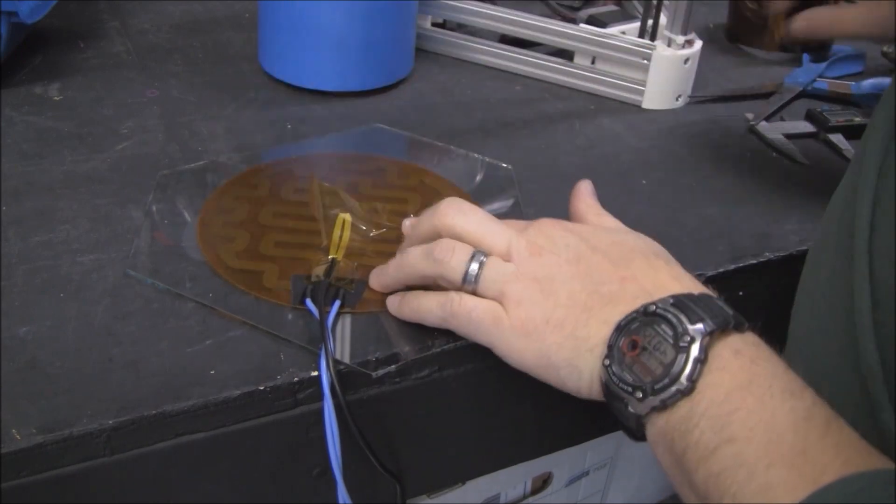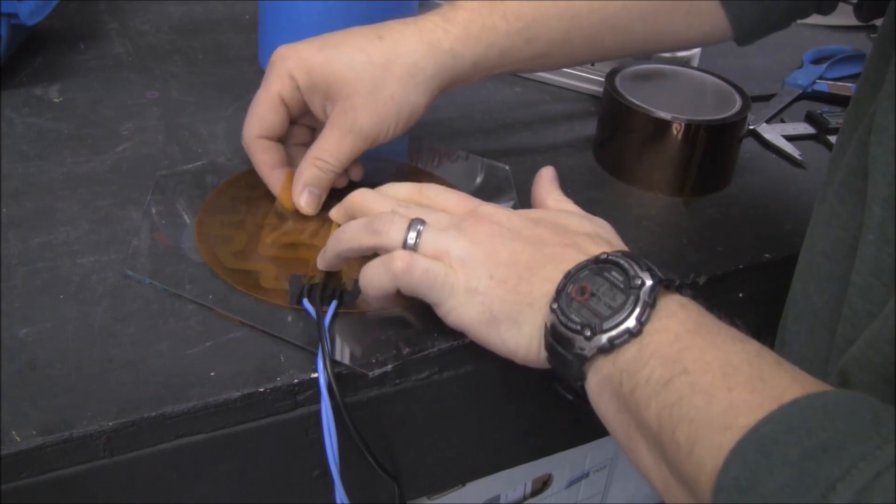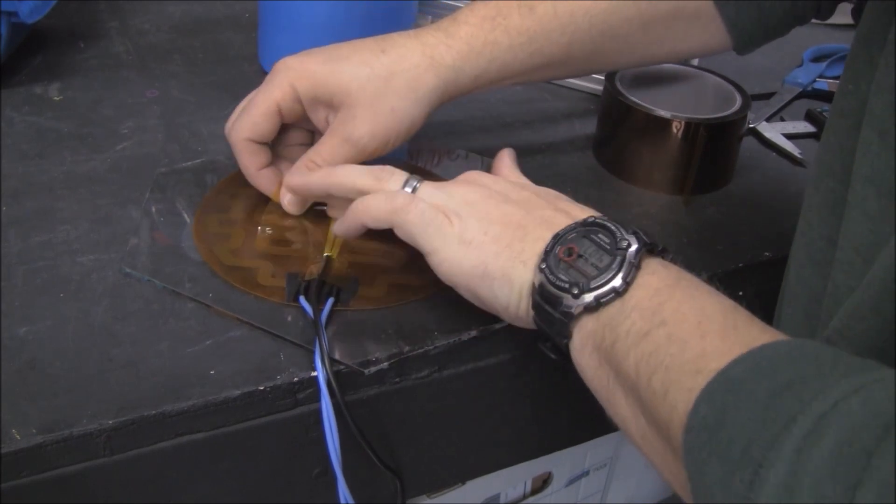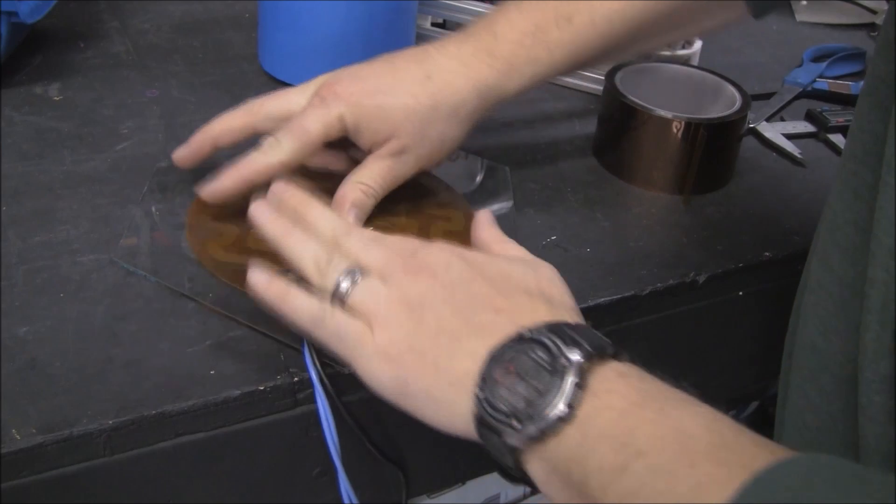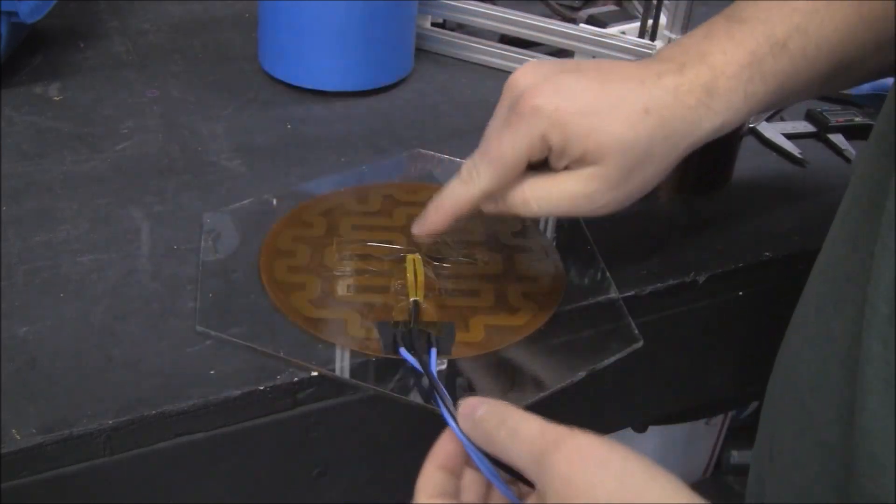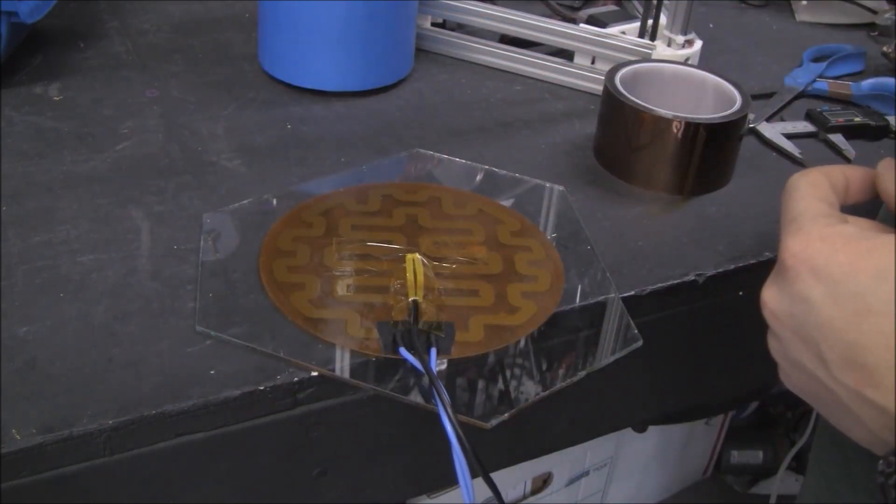Kapton tape is high temperature, so it works very well for holding this thermistor tight against the bed, so we can get an accurate temperature reading.